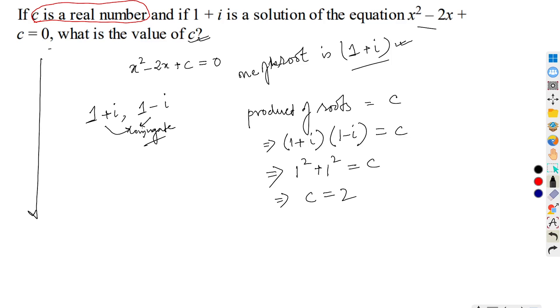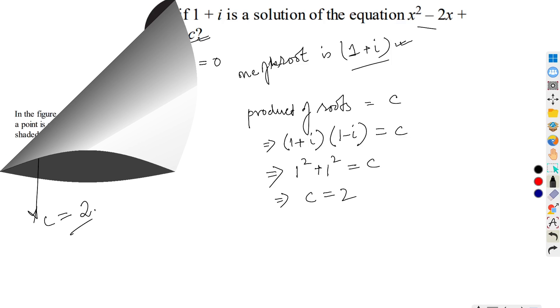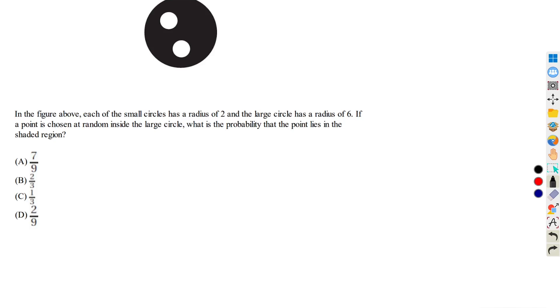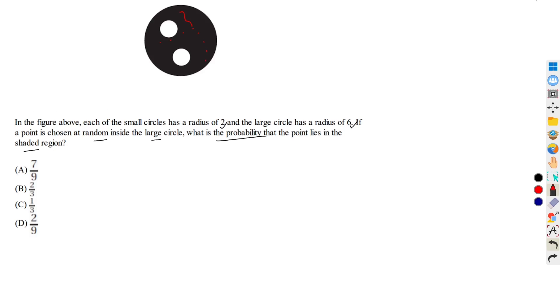In the figure above, each of the small circles has a radius of 2 and the large circle has a radius of 6. If a point is chosen at random inside the large circle, what is the probability that the point lies inside the shaded region? The point would be anywhere, we will exclude the two small circles because they are not in our business. We have to exclude their area from the total area.